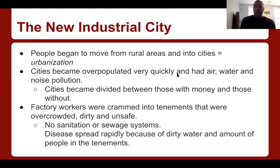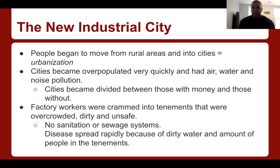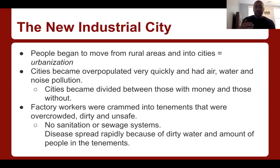Cities become overpopulated with air, water, and noise pollution. Cities become divided between those with money and those without — and many do not have money. Factory workers were crammed into tenements that were overcrowded, dirty, and unsafe. There's no sanitation, no sewage systems, and disease spreads rapidly because of the dirty water and the number of people living in these small tenement buildings. It's very ironic that these inventions led to a decrease in death rate, because as industrialization expands and people flood into cities and live in cramped, unsanitary conditions, deaths start to rise because of this mass production of goods. You're working in places that are very unsafe.